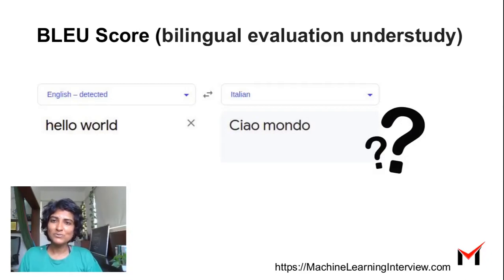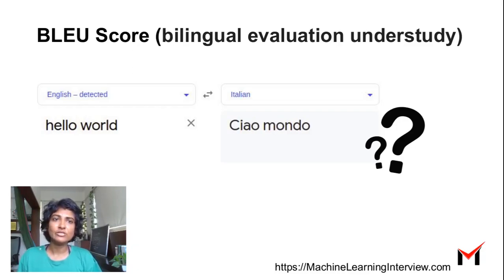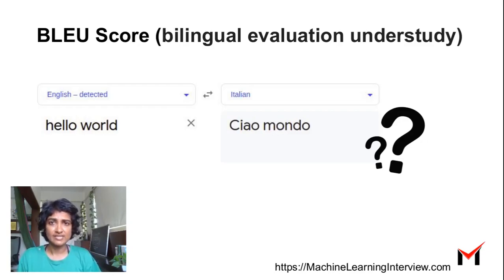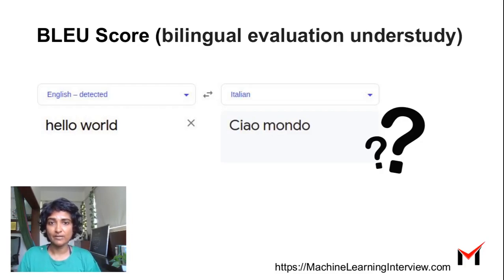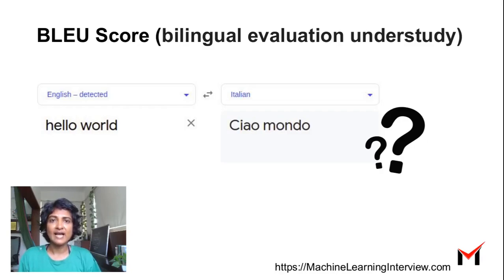What is the BLEU score? BLEU stands for Bilingual Evaluation Understudy and is a popular metric used in many applications like machine translation. Suppose you are given a model to generate a sentence — this could be a machine translation model — and you have a reference sentence, which is what the actual sentence is supposed to be.